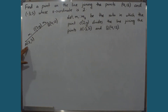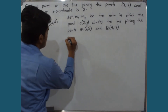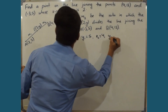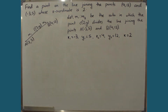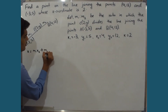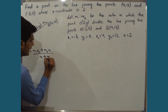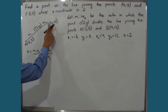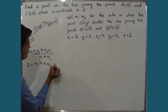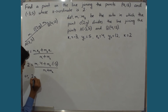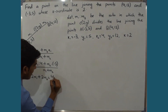Here, A has coordinates X1, Y1 and B has coordinates X2, Y2, and C has coordinates X, Y. So X1 = -3, Y1 = 5, X2 = 4, Y2 = 12, and X = 2, and we need to find Y. For the x-coordinate, using the section formula: X = (M1·X2 + M2·X1) / (M1 + M2). Substituting x = 2: 2 = (M1·4 + M2·(-3)) / (M1 + M2), which gives 2M1 + 2M2 = 4M1 - 3M2.